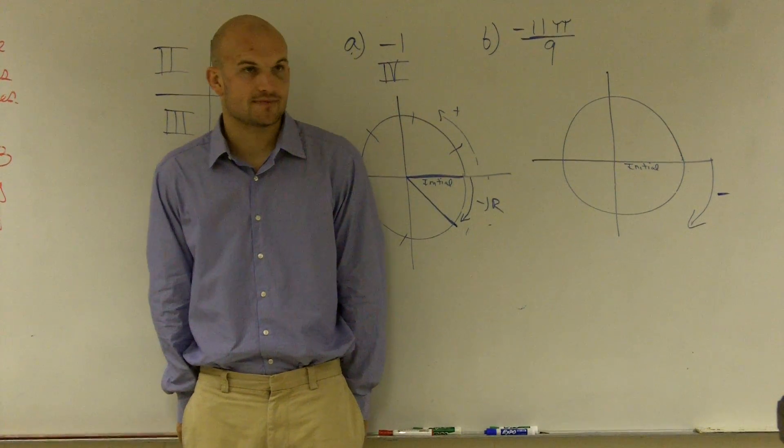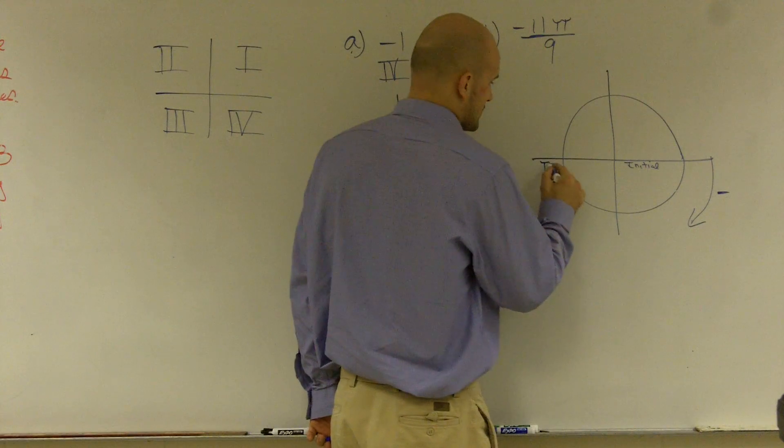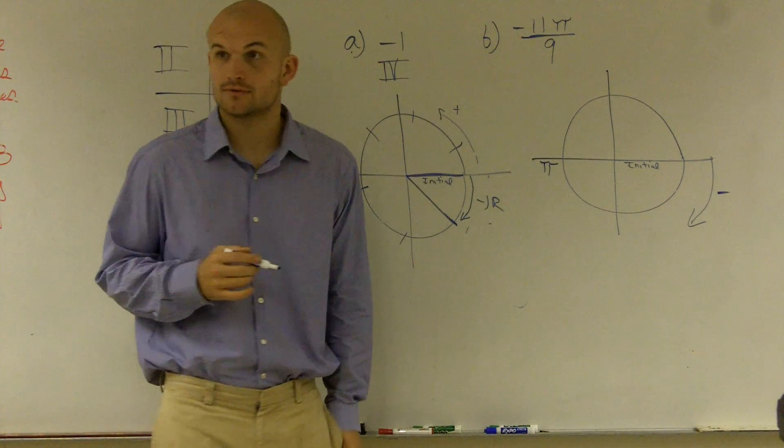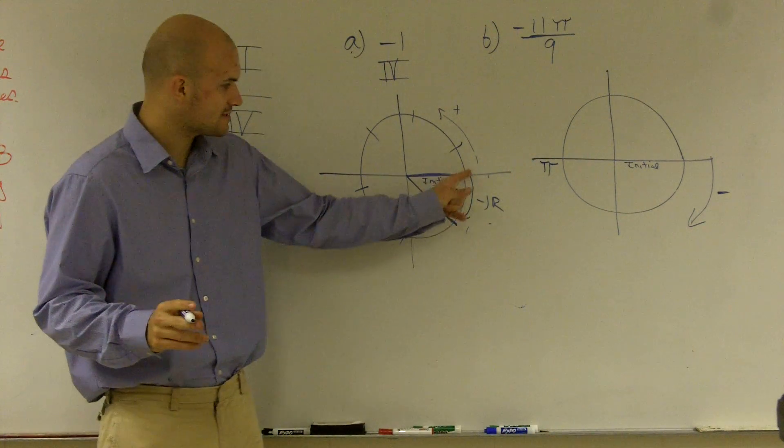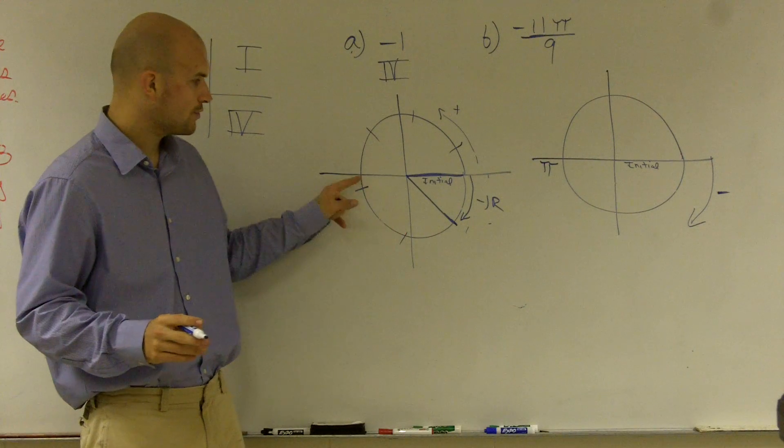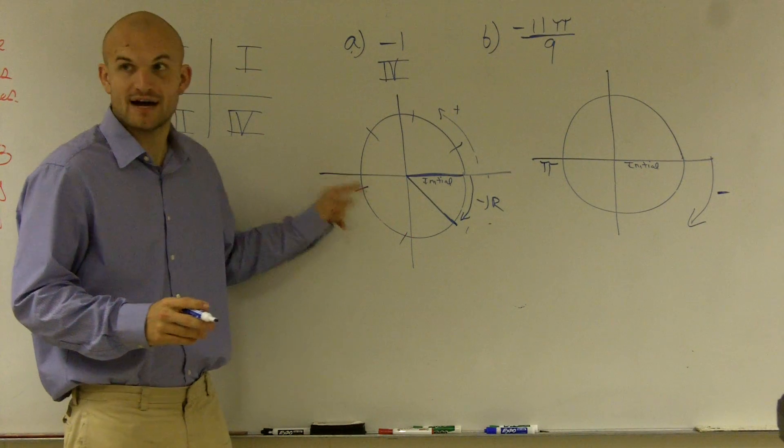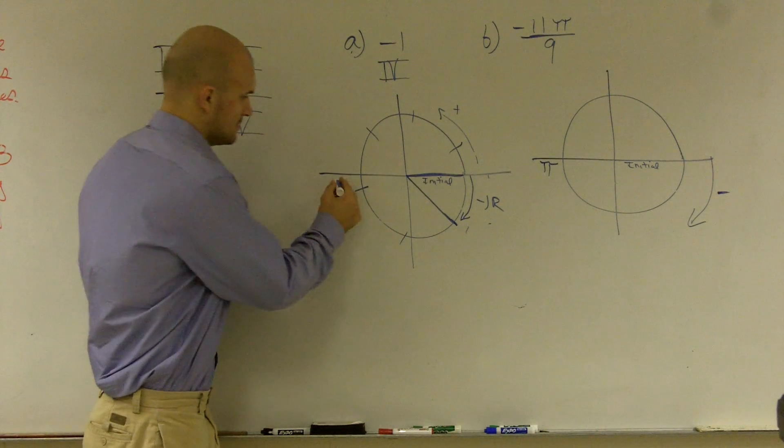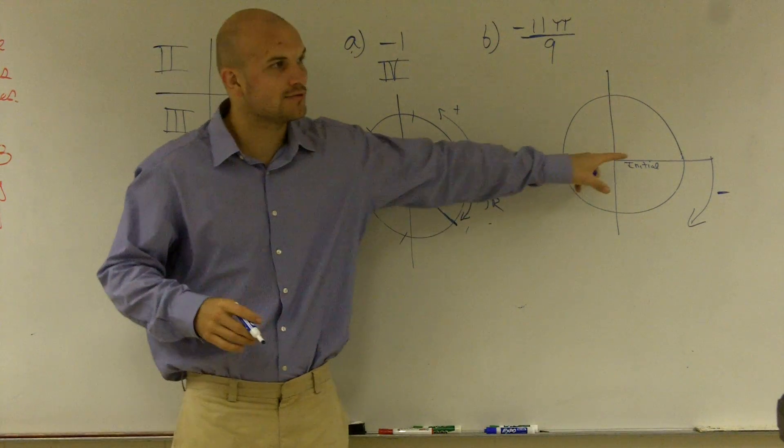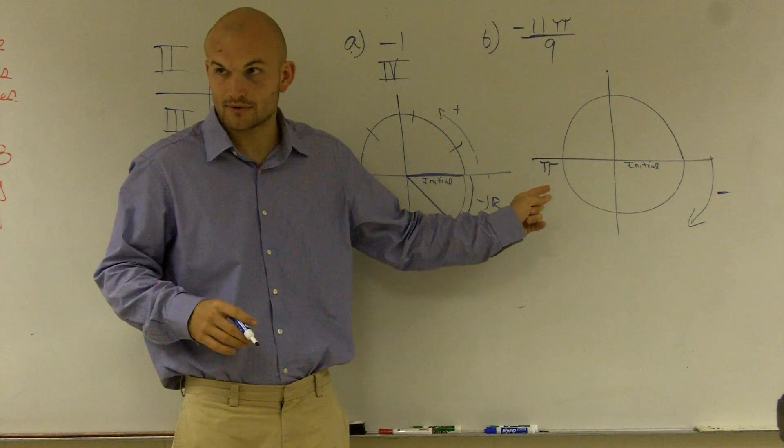So we have to remember a couple things about a unit circle. One thing I told you guys was halfway around was π, right? And if you remember going to our radians, 1, 2, 3, 0.14159, right? That's π. That was for radians. So therefore, we're dealing with this. We know this is π.